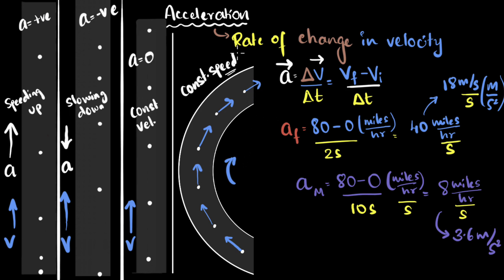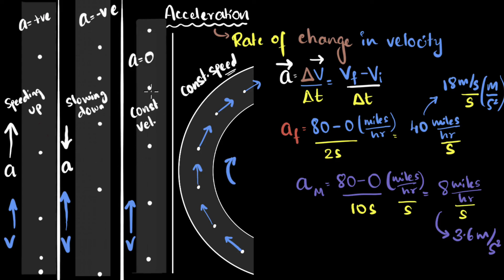To sum it all up: acceleration is a measure of how quickly your velocity — not speed — changes. It's measured as change in velocity divided by the time taken for that change. And therefore its units become meters per second squared, which is basically telling you how many meters per second change in velocity is happening per second. When things are moving in a straight line, if you're speeding up — if your velocity is increasing — acceleration and velocity are in the same direction. If the velocity is decreasing, if you're decelerating, they will be in the opposite direction. And of course, if the velocity is not changing, your acceleration will be zero.